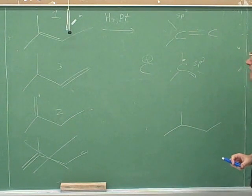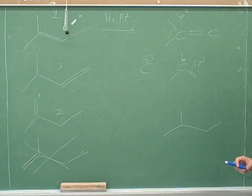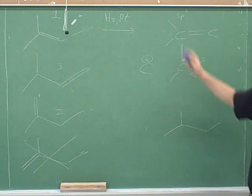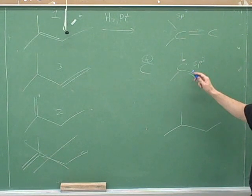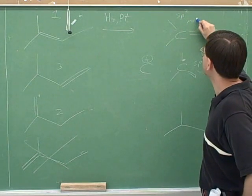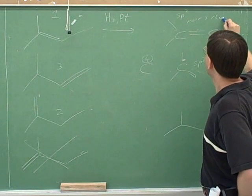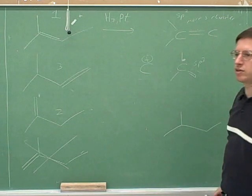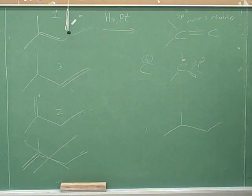So which of these has more S character? SP2, because it's smaller. This has one-third S character and this is only a quarter S character, right? Here, only a quarter of the orbitals are S and here a third are S. So this one has more S character. The most S character would be SP because then it would be 50% S character.